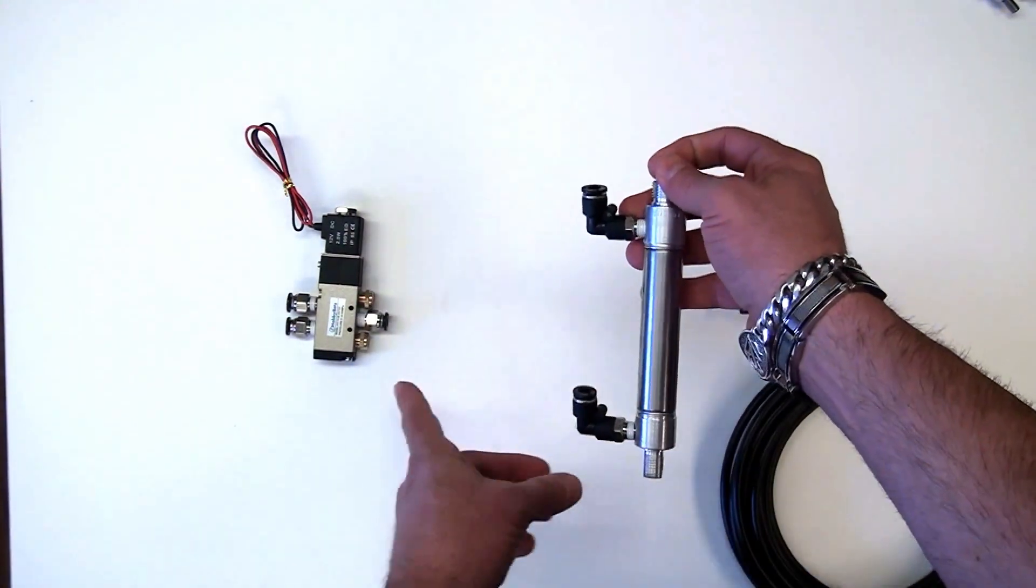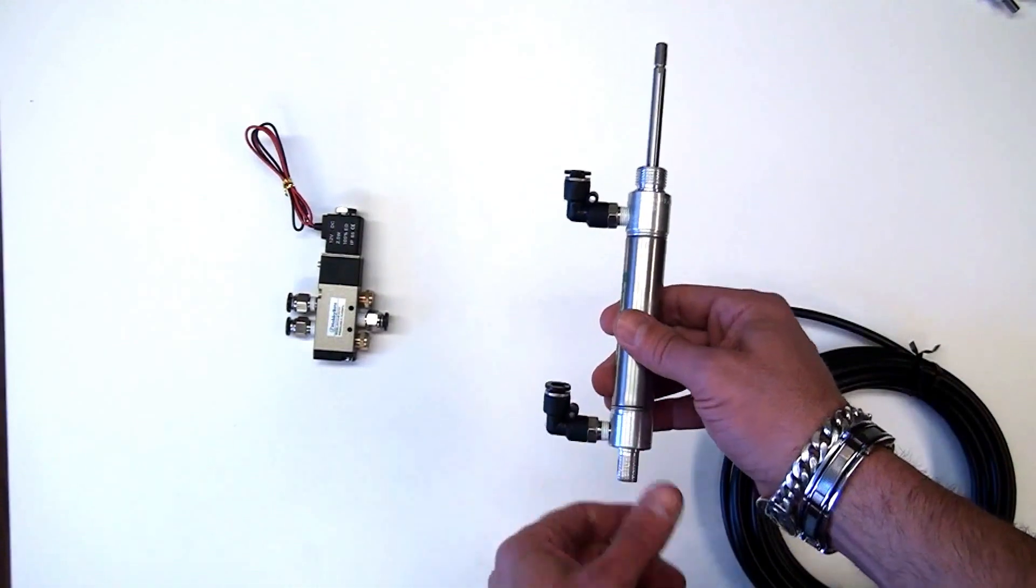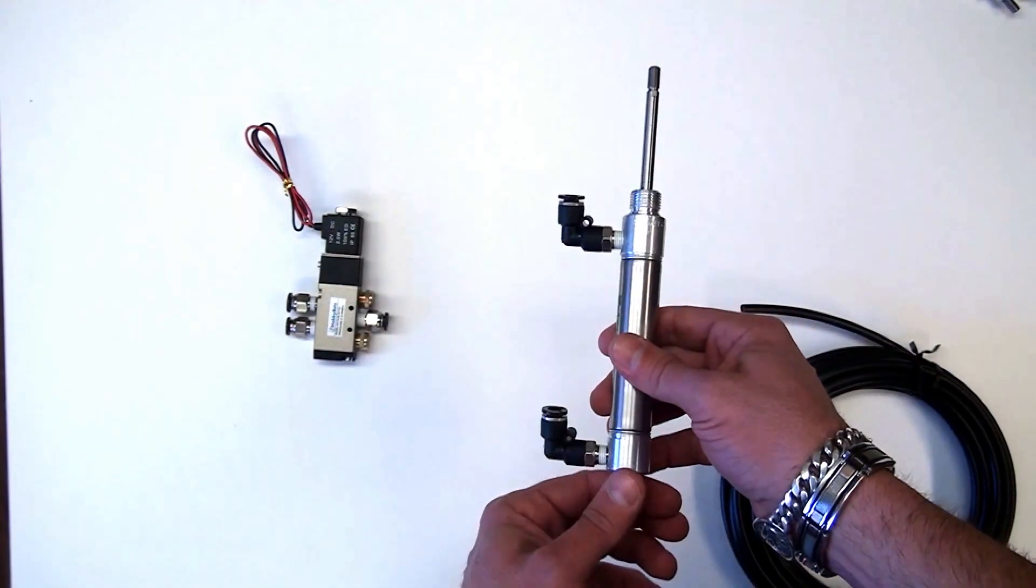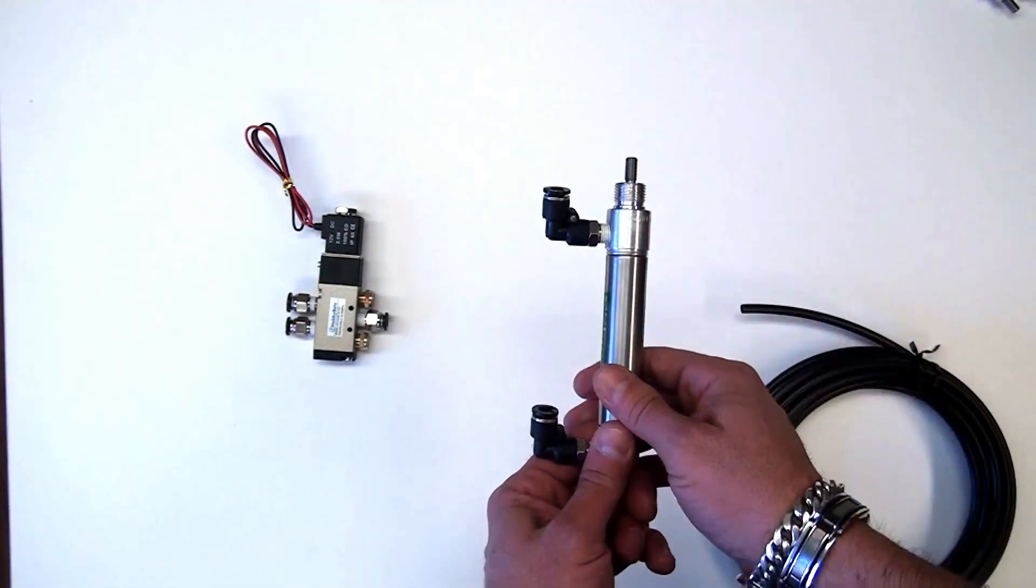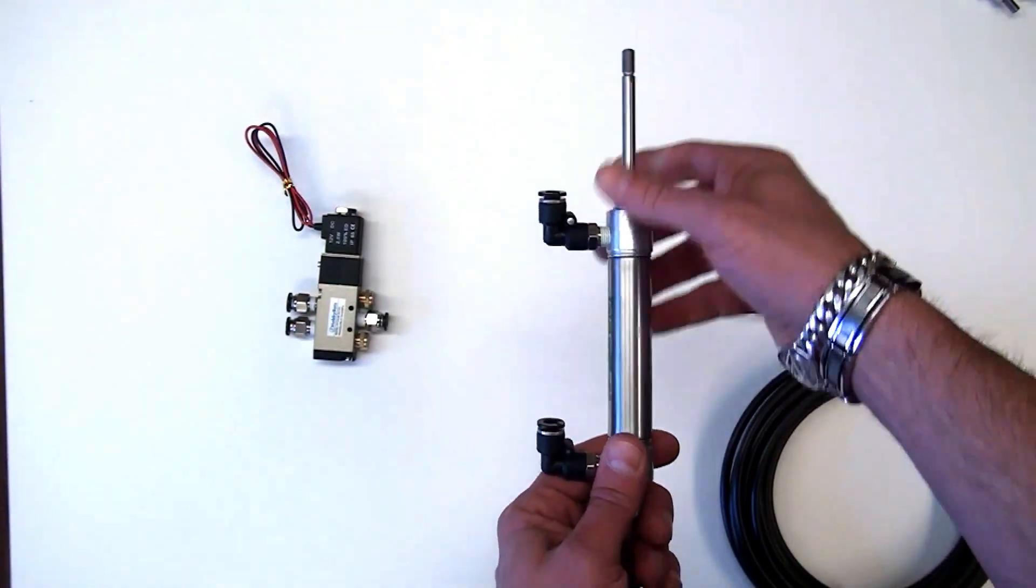If your cylinder, when the solenoid is deactivated, is in the out position, you can swap these air lines and it'll be in the down position when it's off and push out when it's activated.